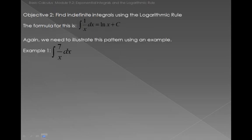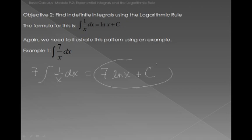Objective 2: Find the indefinite integral using the logarithmic rule. The formula is: the integral of 1 over x dx equals the natural log of x plus a constant. For example, the integral of 7 over x — since 7 is a constant, we rewrite this as 7 times the integral of 1 over x dx, which gives us 7 times the natural log of x plus c.